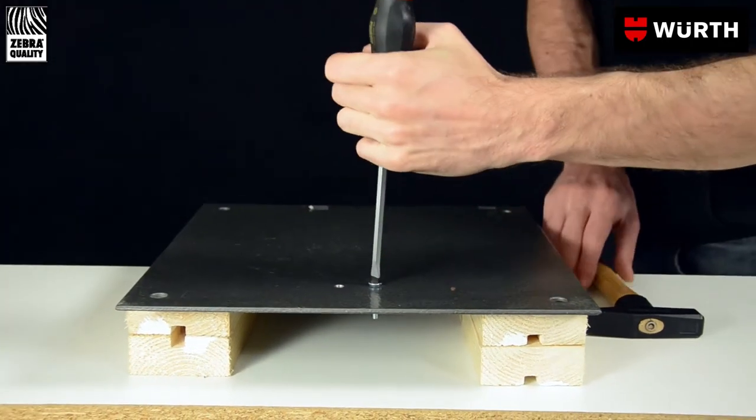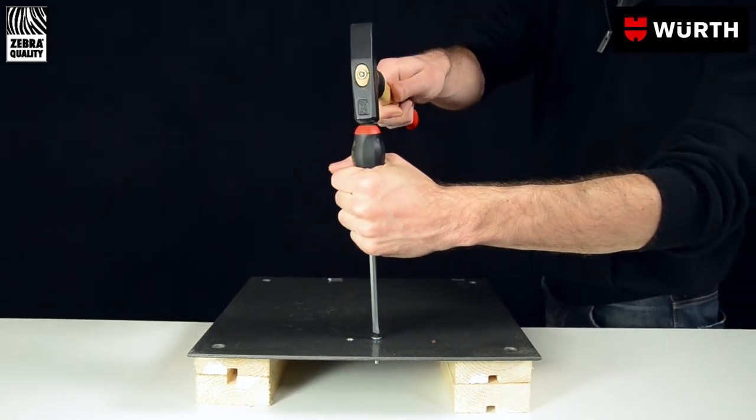Jammed screws can be loosened with a blow of a hammer on the large striking cap on the handle of the screwdriver.